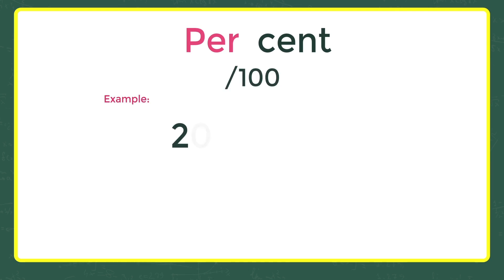Example: 20 percentage of 10. So it becomes 20 by 100 into 10. Two zeros above and two zeros below get cancelled and the answer is 2.